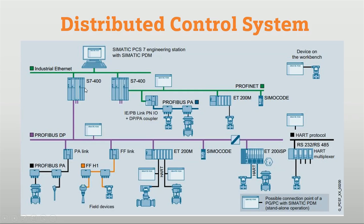From the automation station — which is the master control or dedicated control — we have connected a coupler with Profibus DP, and from the coupler we have connected field devices with active field transmitters or active field distributors. Different communication protocols are used, like ASI interface, Profibus DP, Profibus PA, distributed IO systems, and Simocode kits. Throughout the network we have different communication protocols and networking devices, all connected with the main automation station. With the automation station we can also connect HMI or operating stations for monitoring and controlling the process.